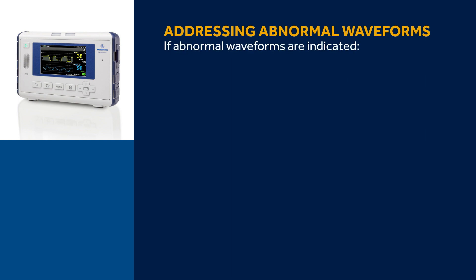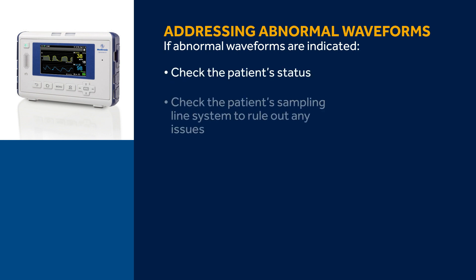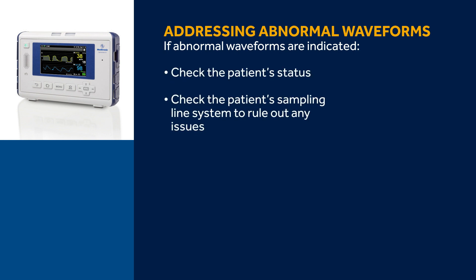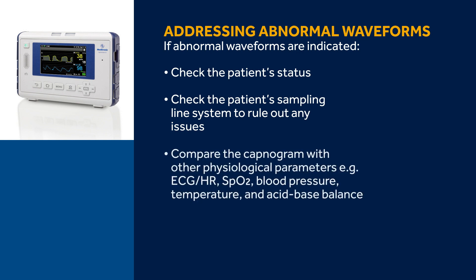If abnormal waveforms are indicated, the following steps are suggested: check the patient's status, and check the patient's sampling line system to rule out any issues such as kinking. It's important to note that correct interpretation of the capnogram can only be achieved by comparison with other physiological parameters such as ECG/HR, SpO2, blood pressure, temperature, and acid-base balance.